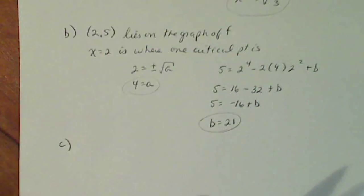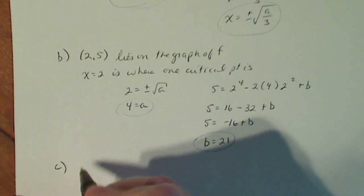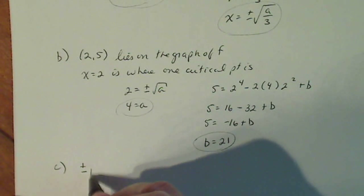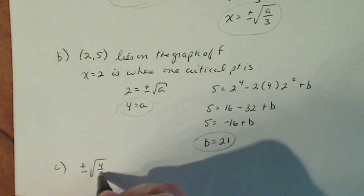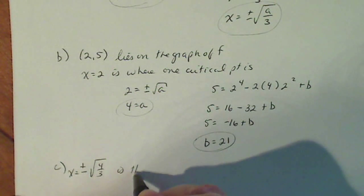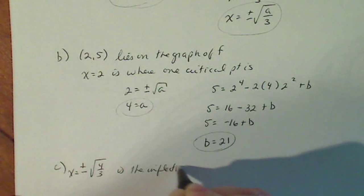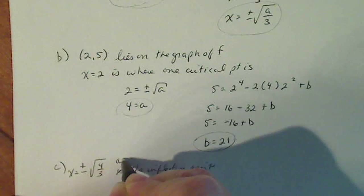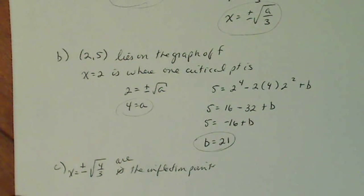So that tells me that plus or minus the square root of 4 over 3 is the inflection points. All right, that's how that problem is solved.